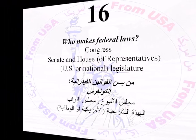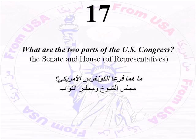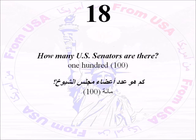Number Seventeen: What are the two parts of the U.S. Congress? There is the Senate and the House, or you could say the House of Representatives. Number Eighteen: How many U.S. senators are there? One hundred. Number Nineteen: We elect a U.S. senator for how many years? Six.